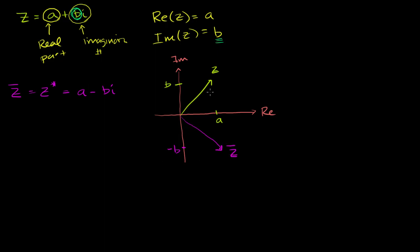So just to visualize it, the conjugate of a complex number is really the mirror image of that complex number reflected over the x-axis. You can imagine if this was a pool of water, we're seeing its reflection over here.